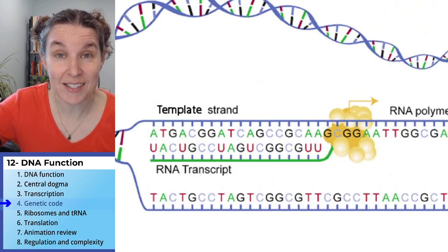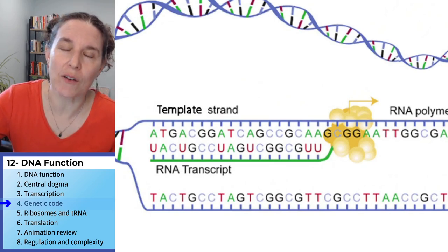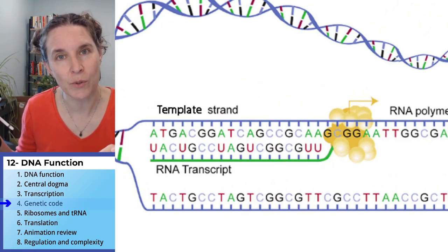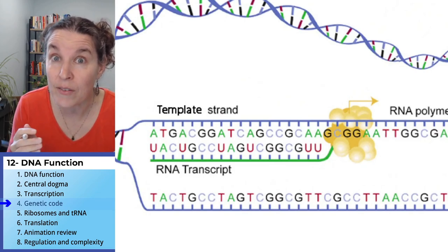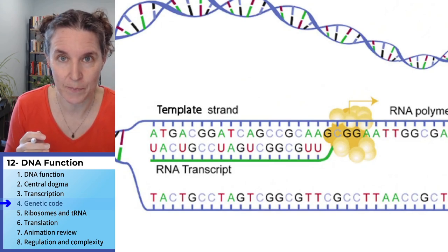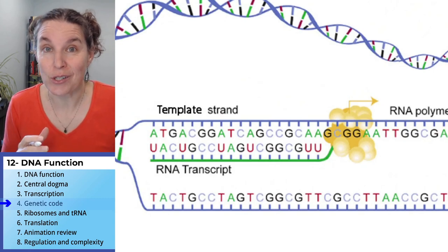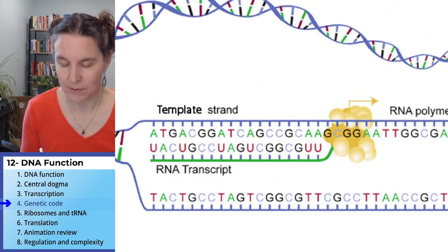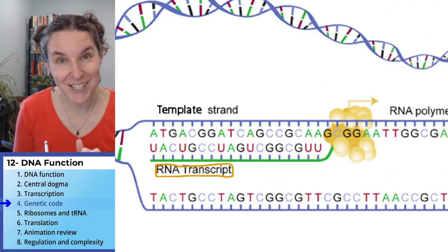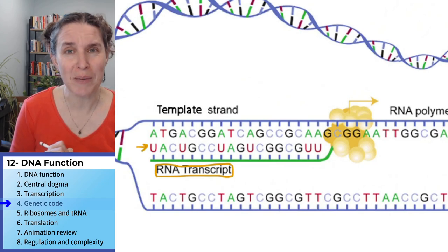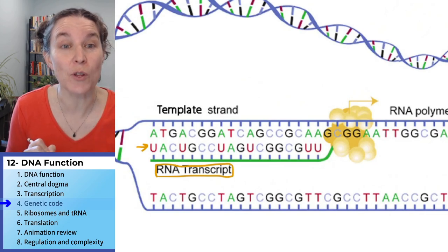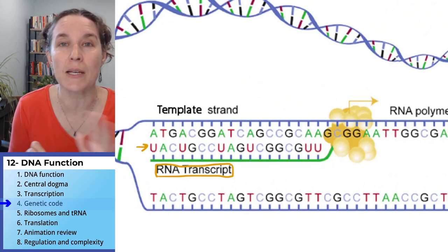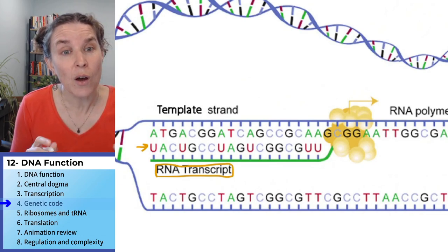Remind yourself: this lovely, gorgeous, ready-for-the-party messenger RNA molecule is nothing more than a strand of nitrogen bases. That's where the information is. This is where our RNA structure becomes relevant. Our RNA transcript has a nitrogen-base sequence, and it looks just like DNA except for the presence of uracil in place of thymine. We don't have any T's in our messenger RNA, but we do have all the other bases.